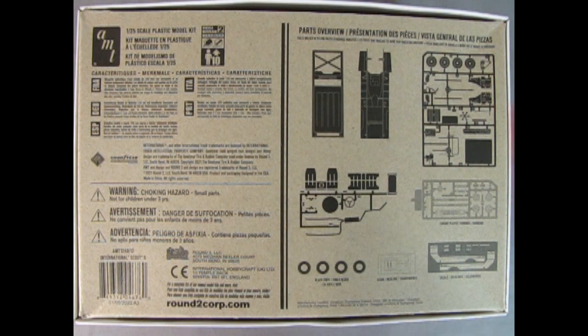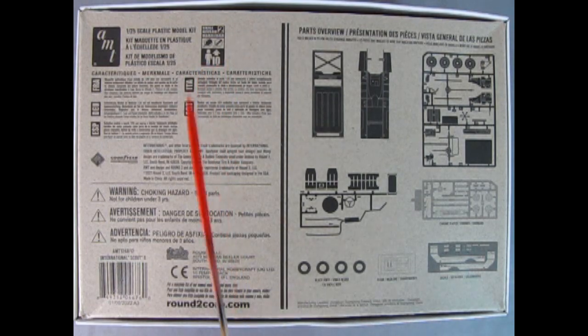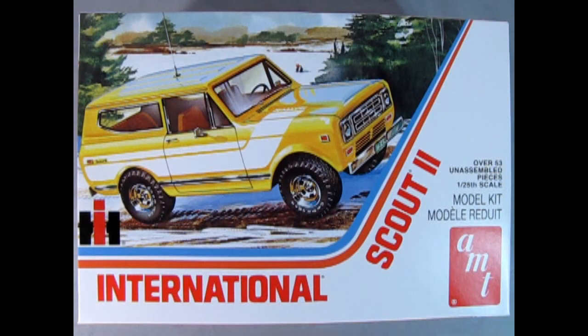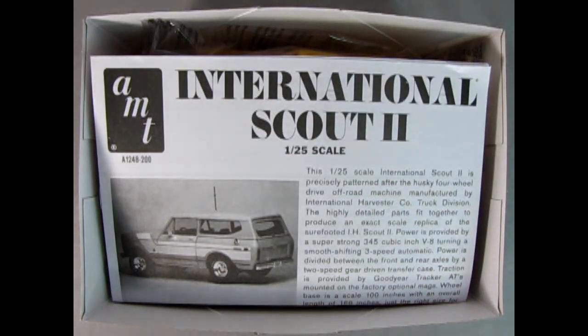On the bottom of the box, we have these silhouettes of all the parts, as well as the decal sheet, the clear and the chrome, and the tires. And this is for skill level two, for ages 10 and up. You will need glue and paint to build this model. Now, let's take the lid off our International Scout 2 and see what we got.